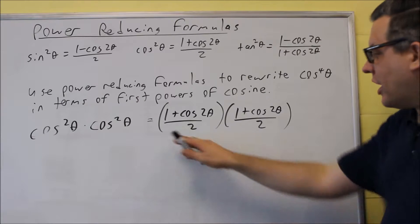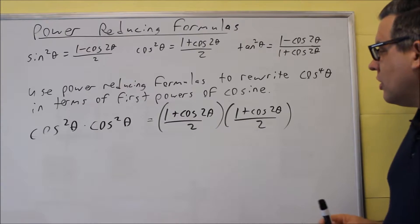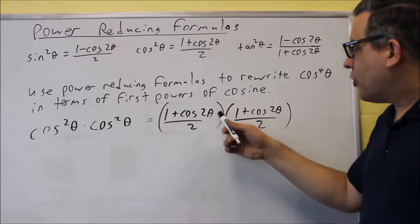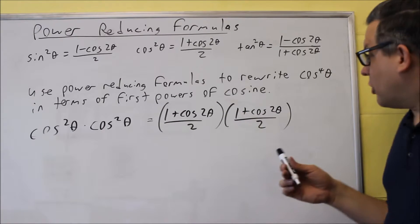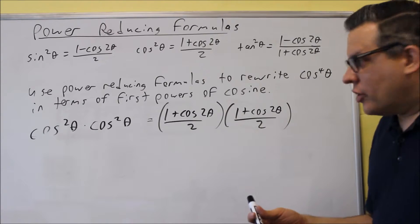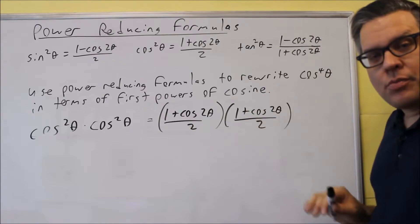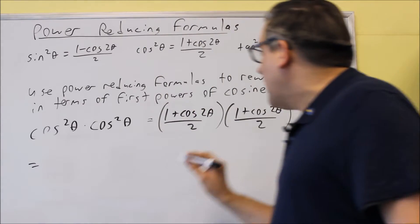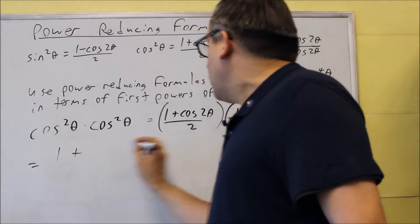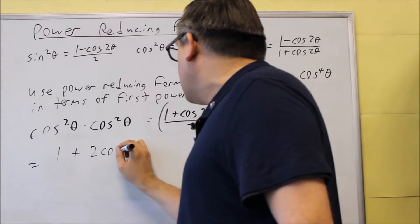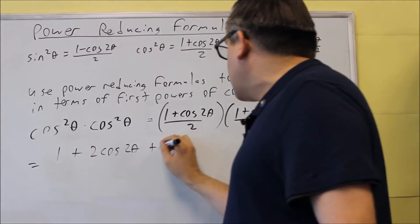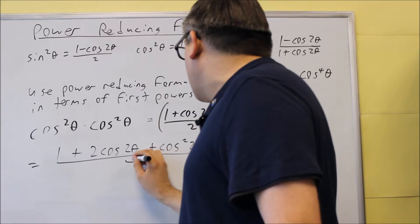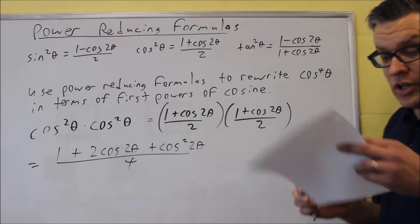The next thing we're going to do is multiply those out. We want to ultimately get rid of the 2θ and write it in terms of just theta. So let's expand this — multiply across the top and across the bottom. Doing that, we get 1 + 2cos(2θ) + cos²(2θ), all over four.